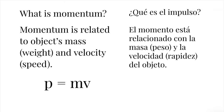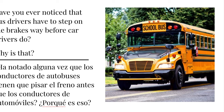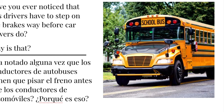Momentum is related to an object's mass or weight, and velocity or speed. The equation is P equals MV, where P is momentum, M is mass, and V is velocity. Because a bus is heavier than a car, it has more momentum and it will take longer for it to stop moving. That's why we have to put the brakes on sooner.